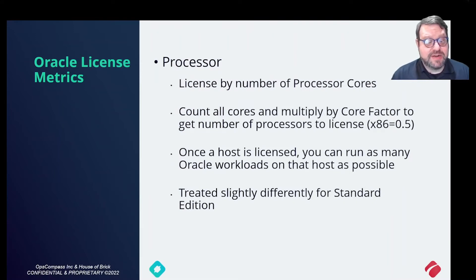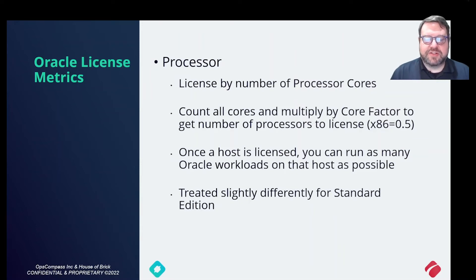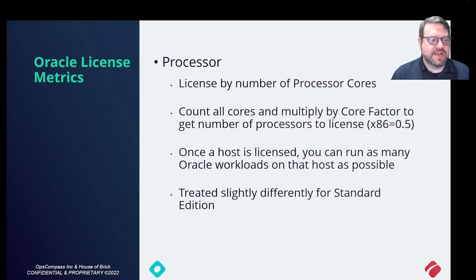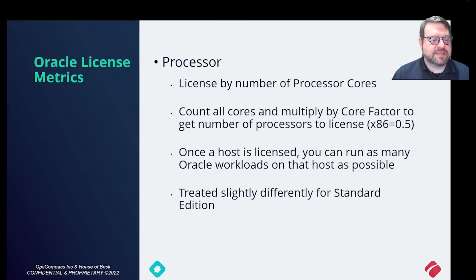The Processor metric is conceptually straightforward: take the number of processor cores present in a server and multiply by the appropriate core factor. For the vast majority of us that will be 0.5, which is the current multiplier for x86 family processors — Intel Xeons, AMDs, etc. You might have a different multiplier for AIX, HP-UX, or SPARC in more traditional big Unix boxes, but for most of us it's 0.5.